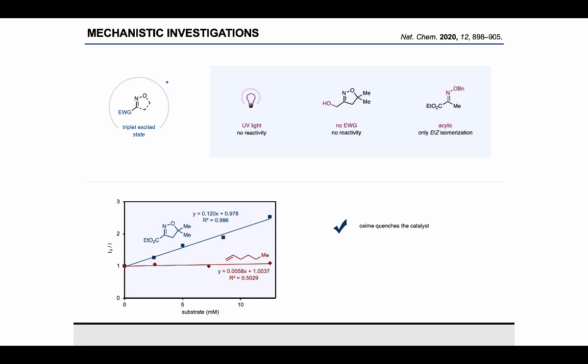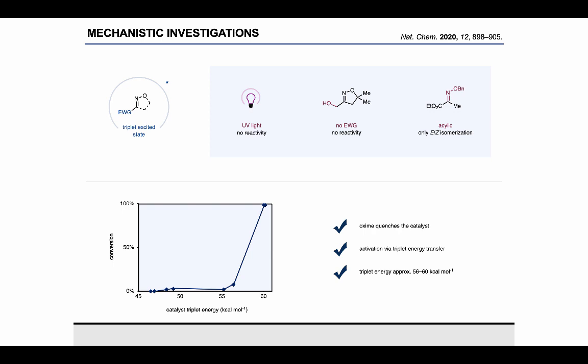Next, the Stern-Volmer quenching study revealed that the oxime is in fact the only species interacting with the catalyst in solution. We certainly also considered the quenching process via single-electron transfer. However, the reduction potential of these substrates are far out of range for the iridium catalyst used in the study, which further confirmed our hypothesis that a triplet energy transfer mechanism is operative. We evaluated a series of different photocatalysts with a broad range of triplet energies. Plotting the conversion against catalyst triplet energies shows really a sharp decrease in reaction efficiency with catalysts below 56 kcal per mole, which points us to a triplet energy of these oxime substrates of around 56 to 60 kcal per mole.